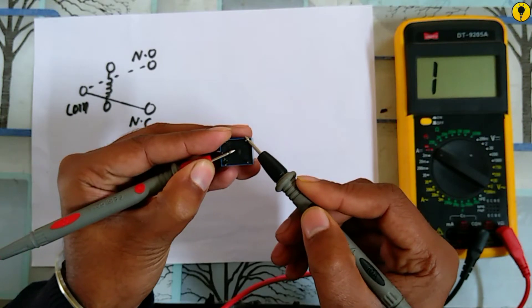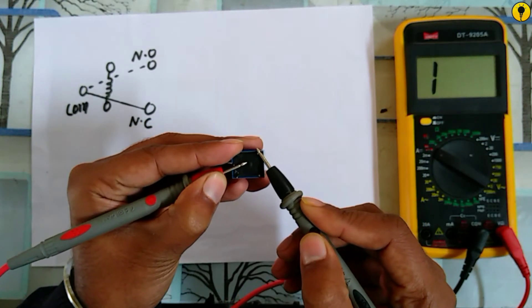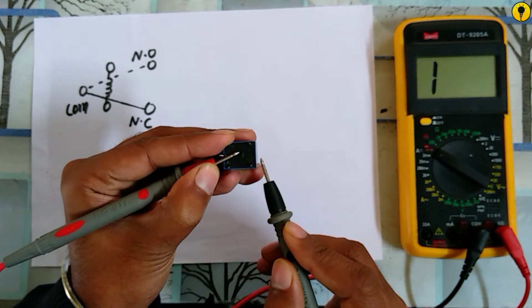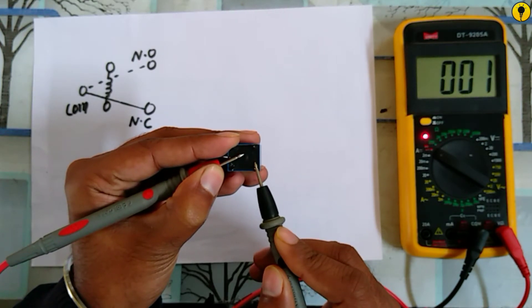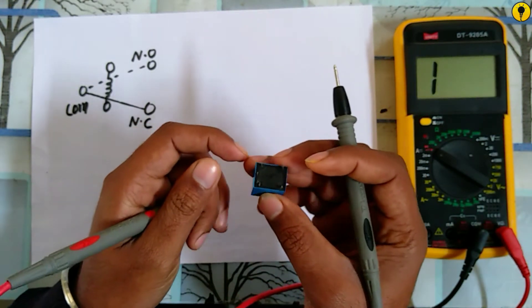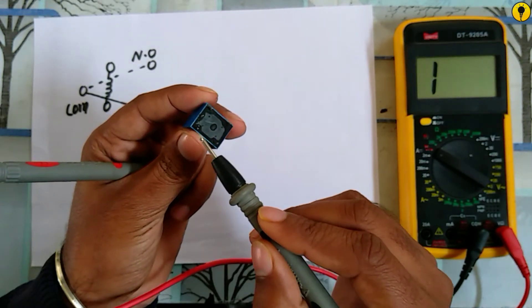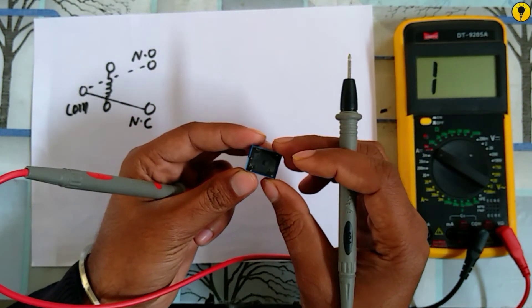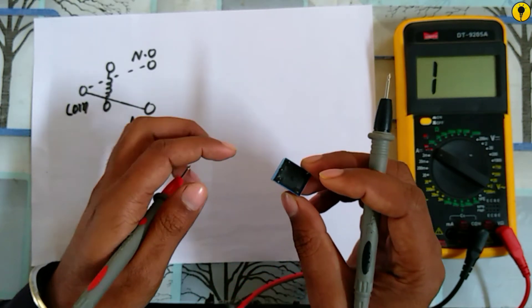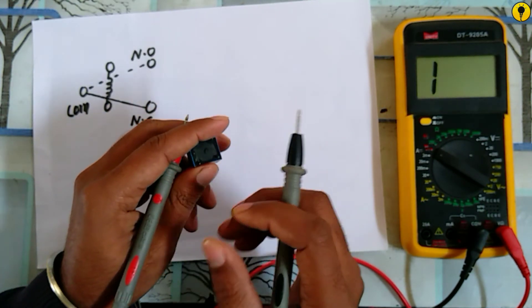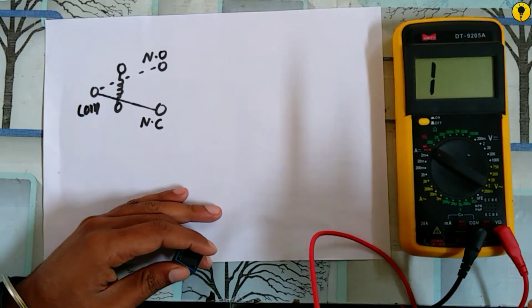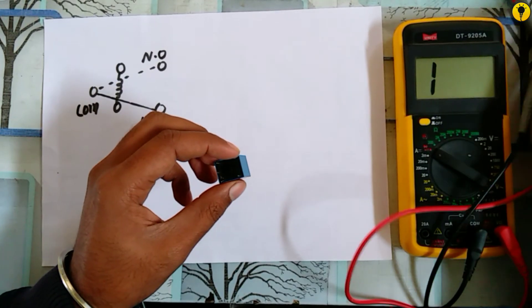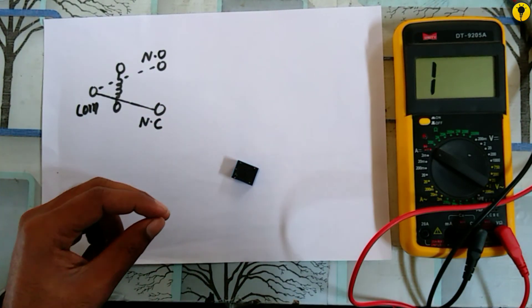Apply one probe of the multimeter on the common terminal and the other on the normally open and normally closed terminals. If the normally open contact shows some reading or beep sound, or the normally closed doesn't show any beep sound, it means that your relay is not in good condition.